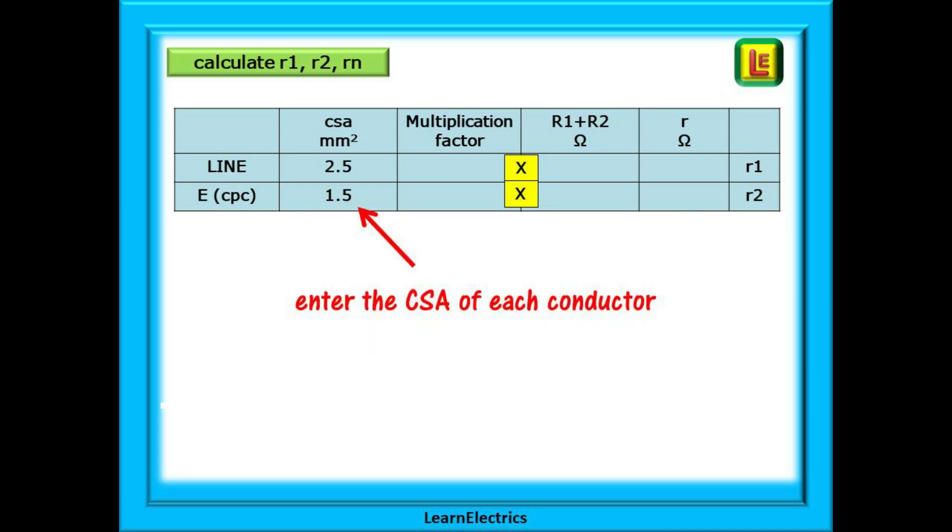So, put in the 2.5 for the CSA of the line and the 1.5 for the size of the CPC or Earth. Now, here's the trick.